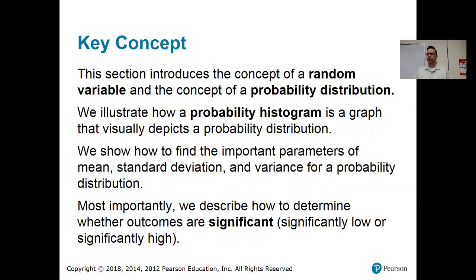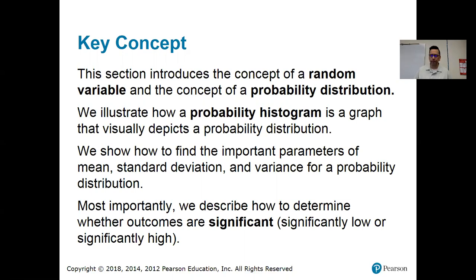We're going to start off with some vocabulary. We're going to talk about random variables, probability distributions, and probability histograms. Then we're going to talk about how to find the mean, standard deviation, and variance for a probability distribution, and then talk about whether outcomes are significantly high or significantly low. So quite a bit to do in this section.